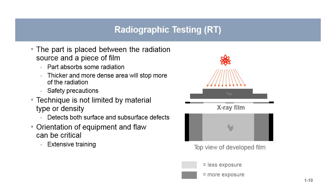Here are some basics of radiographic testing. The part is placed between the radiation source and a piece of film. The part absorbs some radiation. Thicker and more dense areas will stop more of the radiation. So if you had a chunk of tungsten in there, which is really dense, it would absorb a lot of radiation and would show up as a really white spot on the film.